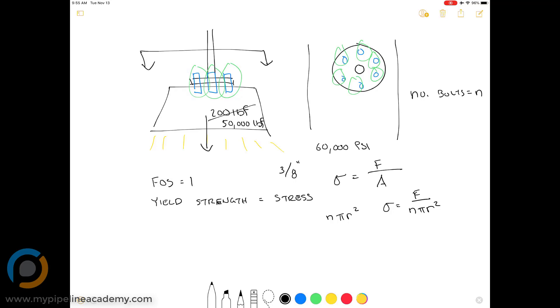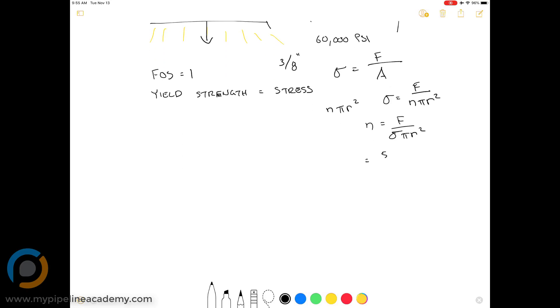We know that our force is 50,000 pounds. We know that our diameter of the bolts is 3 eighths of an inch. So our radius is going to be half of that. So it's 3 sixteenths of an inch squared. And then we basically just solve for n. So solving for n gives us n equals force over sigma pi r squared. And that equals 50,000 pounds force over 60,000 pounds force per square inch times pi times 3 sixteenths of an inch squared.